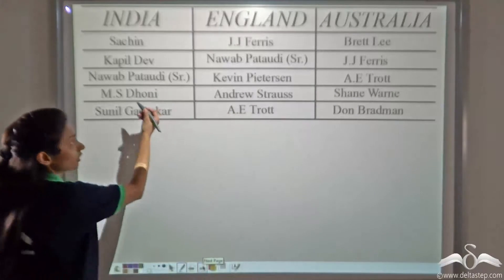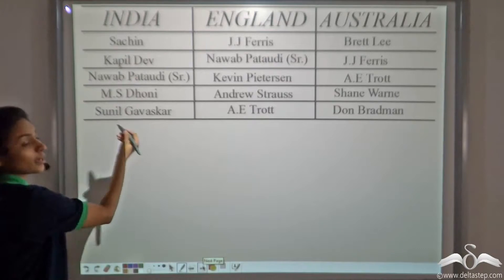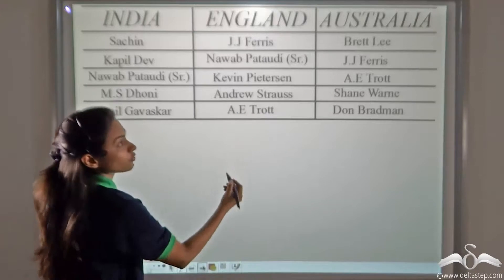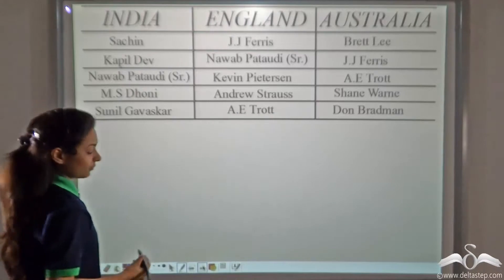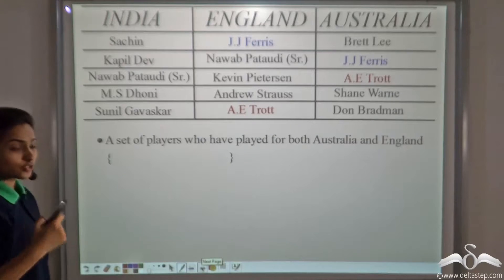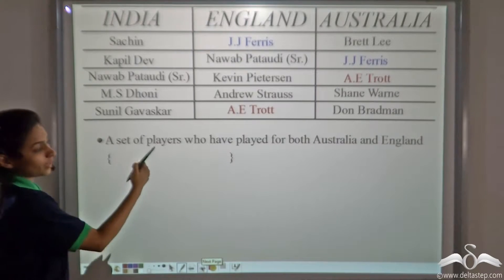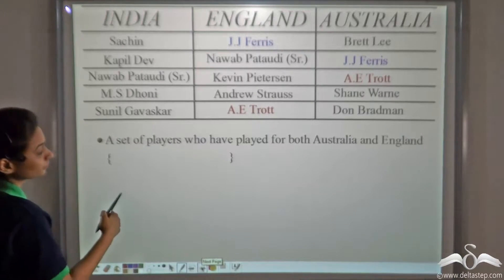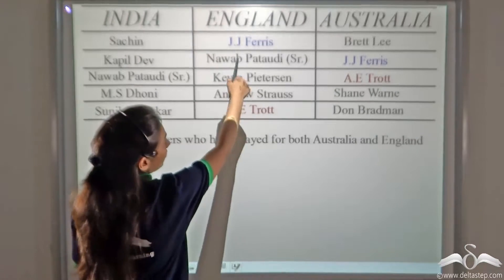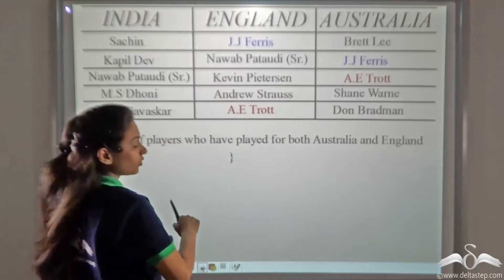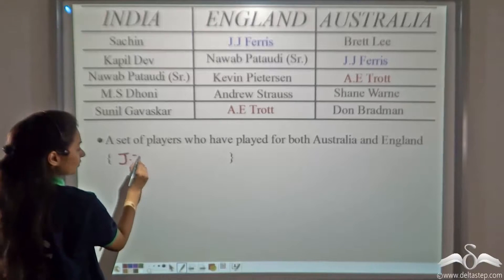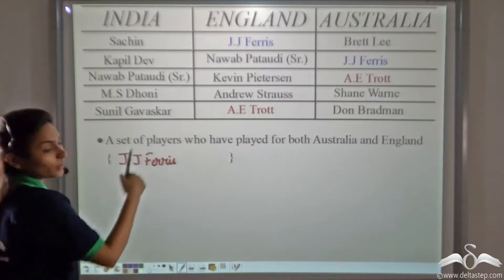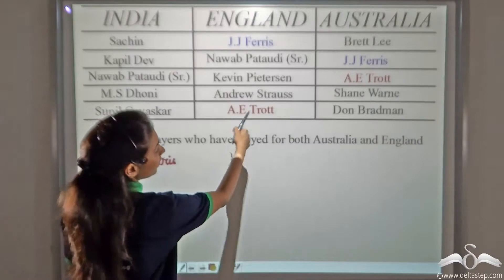Here we have cricket players who have played for India, players who have played for England, and players who have played for Australia. If I ask you to name the set of players who have played for both Australia and England — J.J. Ferris has played both for England and Australia, so we write J.J. Ferris. There is one more player, A.E. Trott.